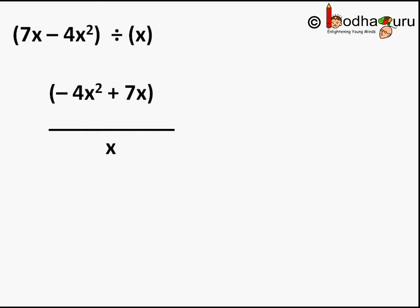First we have to write it properly. Arrange the terms in the polynomial in descending order of their degree. That is -4x² + 7x.